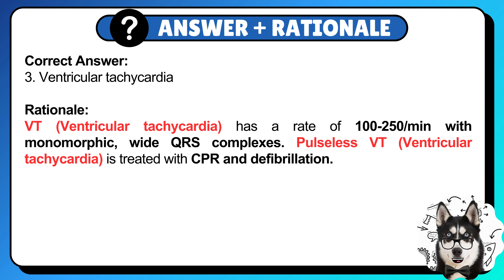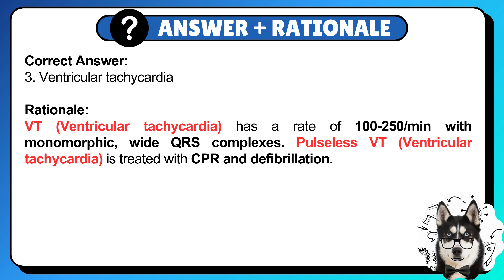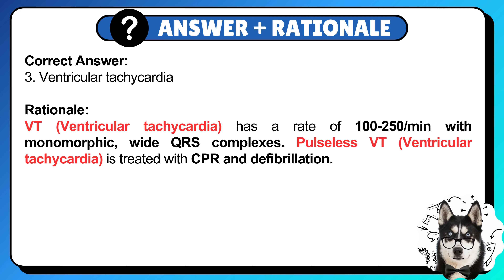Correct answer: 3. Ventricular tachycardia. VT has a rate of 100 to 250 per minute with monomorphic, wide QRS complexes. Pulseless VT is treated with CPR and defibrillation.